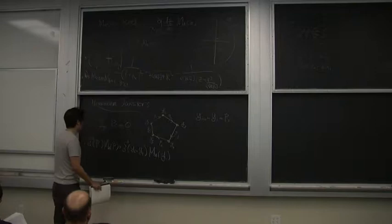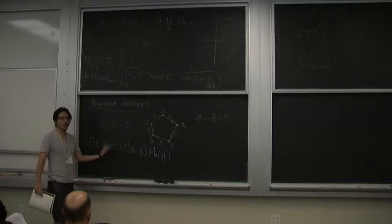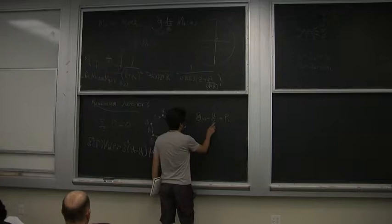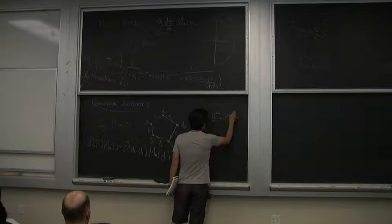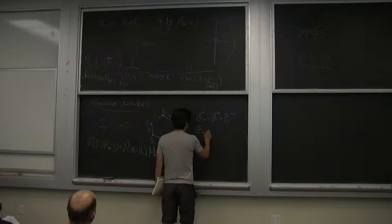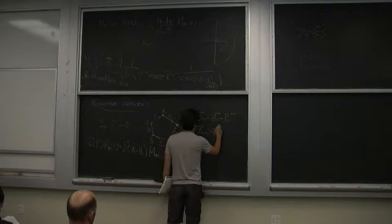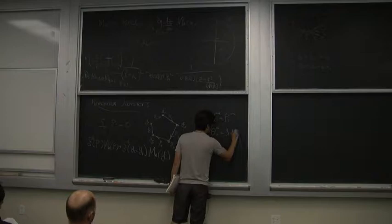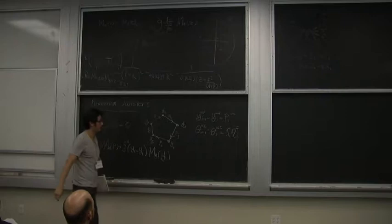Since we're looking at N=4 super Yang-Mills, we can do the same with fermionic variables. Instead of just Y variables (the vector variables), I can also define spinor variables. So I define theta_{i+1,α} minus theta_{i,α} equals lambda_i eta_i. My superfunction, which was in terms of lambda, lambda-tilde, and eta, is now converted into something in terms of Y and theta.